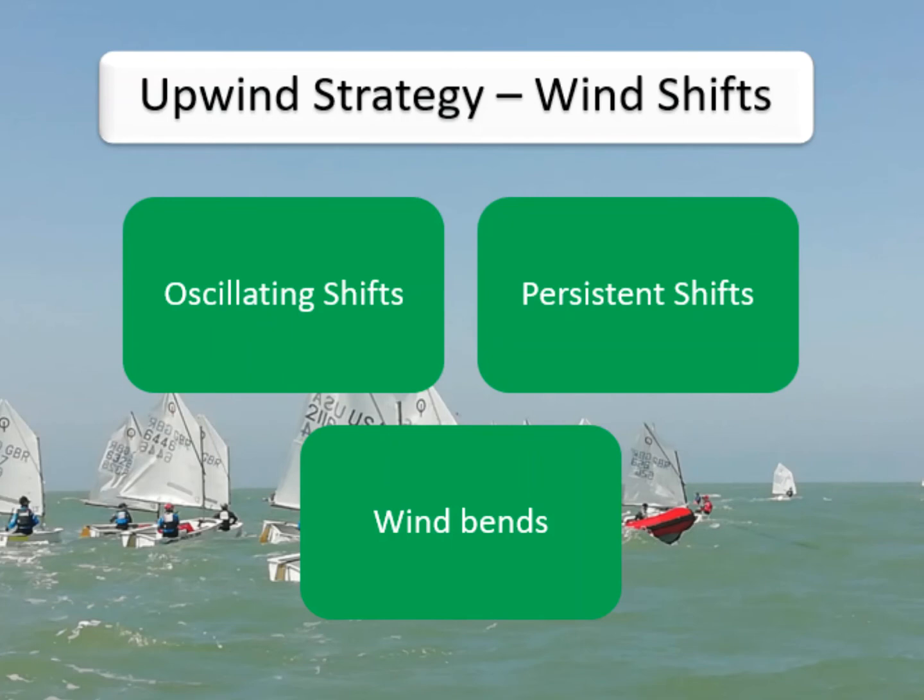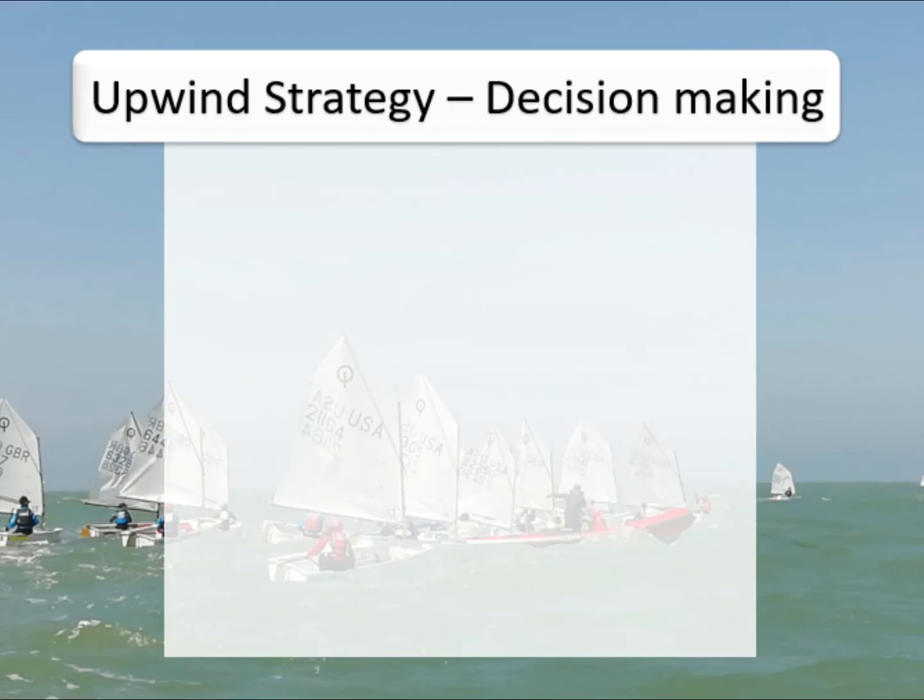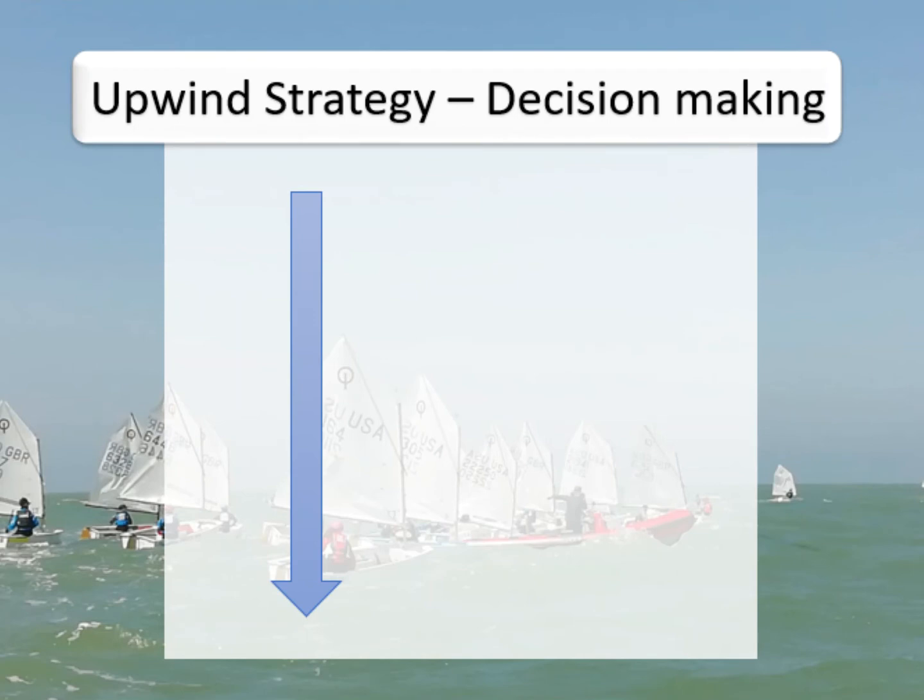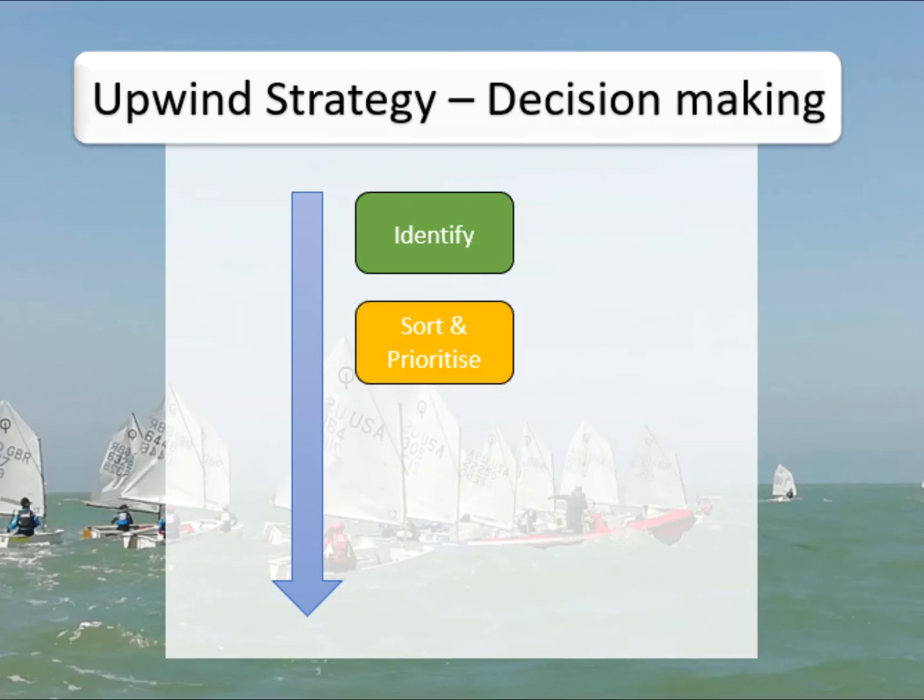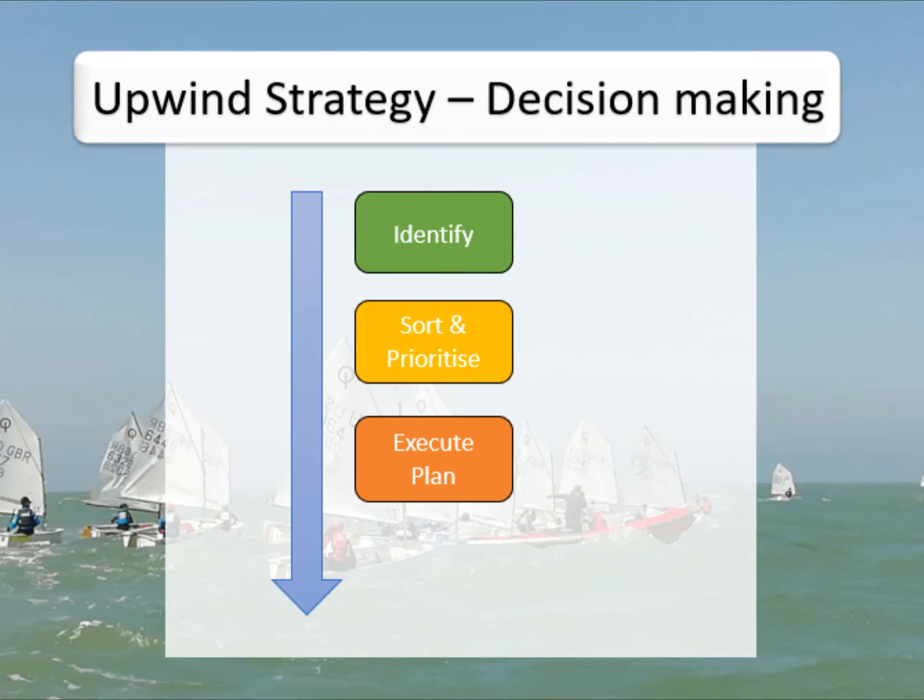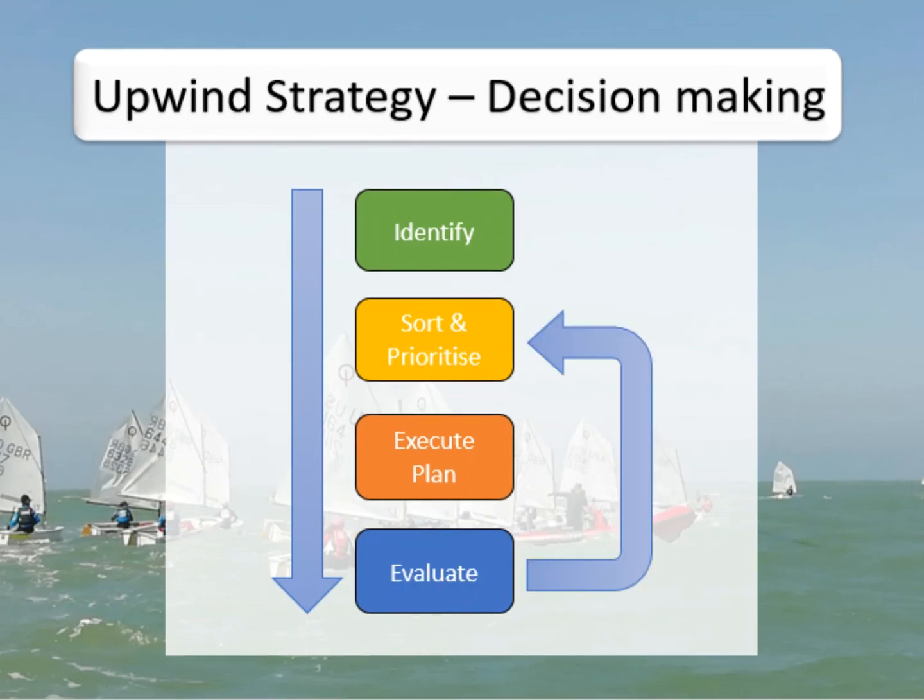Now, having added some understanding of simple wind shifts and bends to our strategy toolbox, it's important that we recap how to use this information in our decision making process on the water. As discussed in a little bit more detail in my previous video on strategy and wind strength: First, we must identify these gain features, whether they're changes in wind strength or direction. This can be done pre-start or even pre-event. Then we must prioritize this information into two or three key features and create a plan around those. Next, we actually execute that plan, trying not to forget your plan within the pressure of the other boats. And finally, we evaluate it, feeding that information back into the system for next time, learning and adapting.